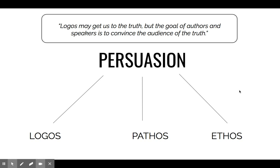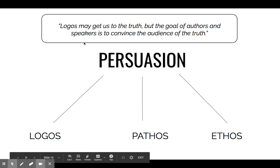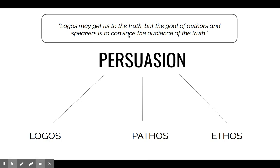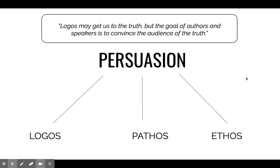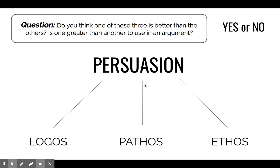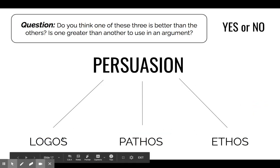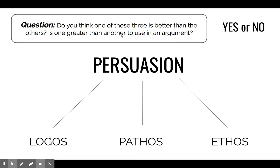Weeks one and two, we looked at the foundations of argument, which I would argue is really centered around Logos. Logos may get us to the truth, but the goal of all authors and speakers is to convince the audience of truth. Argument alone is really not enough in the real world — you have to lean hard into persuasion, and that's going to take all three of these. I'm going to leave you with one question: out of these three — Logos, which is logic and reason; Pathos, emotion and empathy; and Ethos, credibility and ethics — do you think one of these three is better than the others to use in an argument or persuasive writing? Answer yes or no, and then we will continue on with day two of synchronous learning.